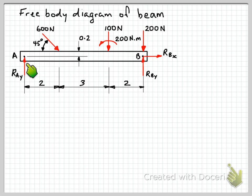Now that we have our free body diagram and unknowns identified and labelled, we can write out the equations of equilibrium to solve for those unknown reaction forces. We've got three equations of equilibrium: sum of the moments and two force component equations. We usually start with a moment equation because that enables us to take out one or more unknown reaction forces, leaving one equation with one unknown. We could take moments about point A, which eliminates R_AY and also R_BX since it passes through A — so either way, we end up with only one unknown.